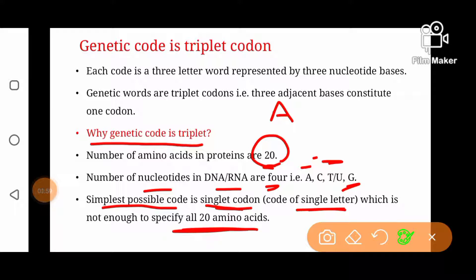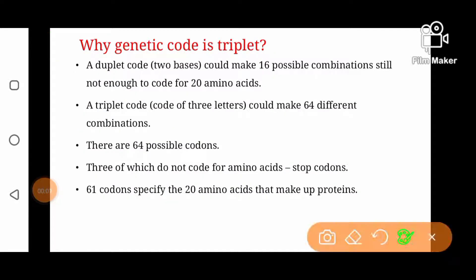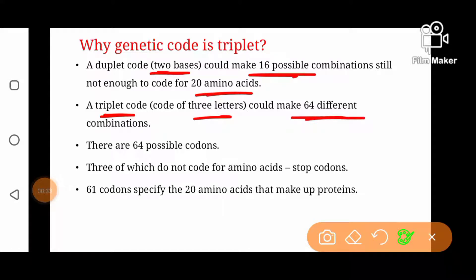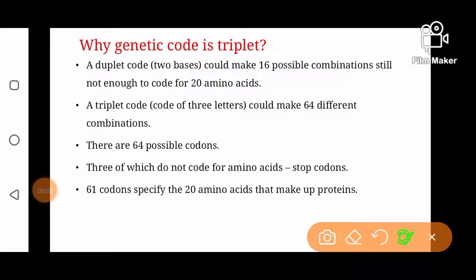These codes are not enough for all 20 amino acids, that is why a singlet code is not enough to code for all 20 amino acids. A duplet code, which is composed of two nucleotide bases, could make 16 possible combinations, which are still not enough to code for all 20 amino acids. That is why a triplet code is more suitable and more reasonable — a code of three letters could make 64 possible combinations, so there are 64 possible codons.